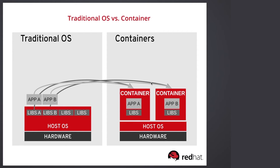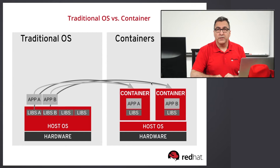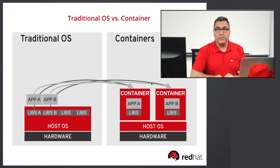We see on the left that applications A and B are running on the same operating system image, sharing various libraries. On the right, we see that the applications have been encapsulated and isolated into their own container, with each having its own copy of libraries, while sharing the underlying operating system image.